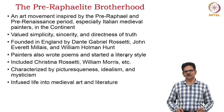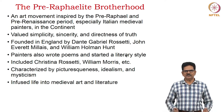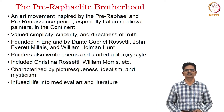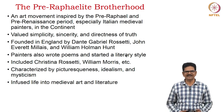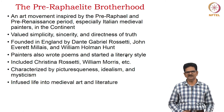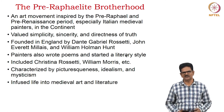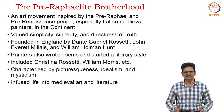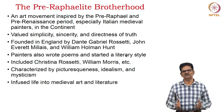This is a very important phenomenon of the Victorian time called the Pre-Raphaelite Brotherhood — an art movement inspired by the Pre-Raphael and Pre-Renaissance period, especially Italian medieval painters. This movement valued simplicity, sincerity and directness of truth. It was founded in England by Dante Gabriel Rossetti, John Everett Millais and William Holman Hunt. Many painters wrote poems and started a literary style which included Christina Rossetti and William Morris. They used picturesqueness, idealism and mysticism in their poems, and infused life into medieval art and literature.